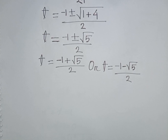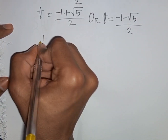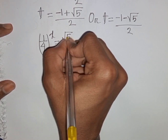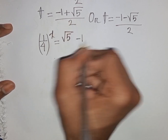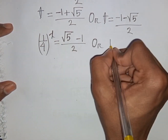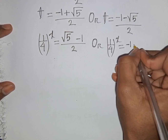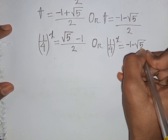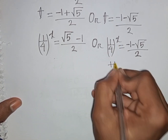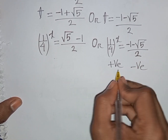Remember that t = (1/4)^x. Since (1/4)^x is always positive for any value of x, but (-1 - √5)/2 is negative, positive cannot equal negative. So that solution is rejected.